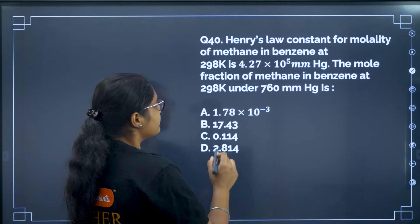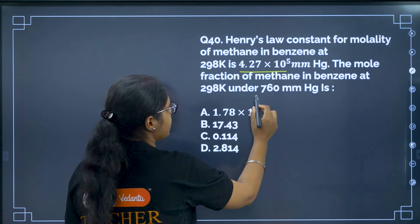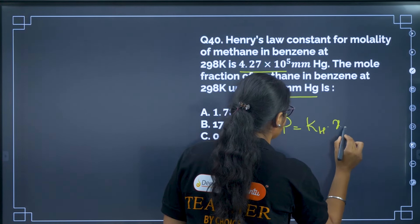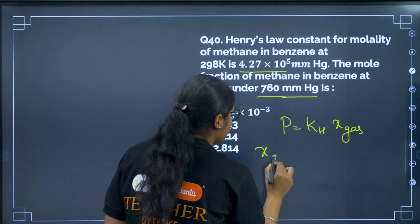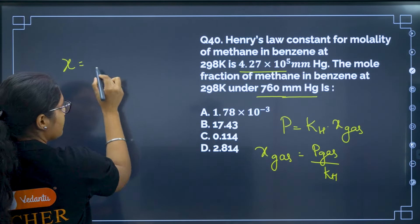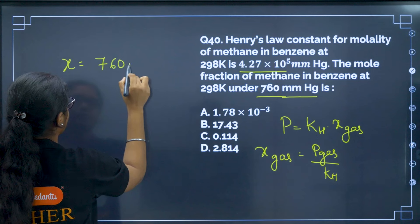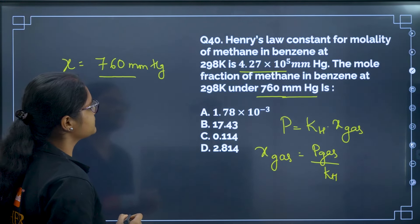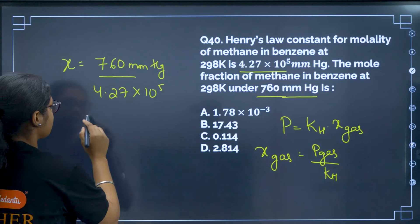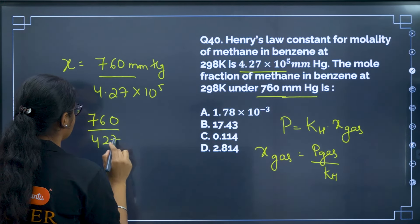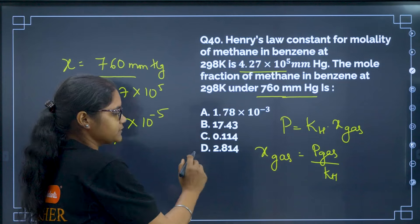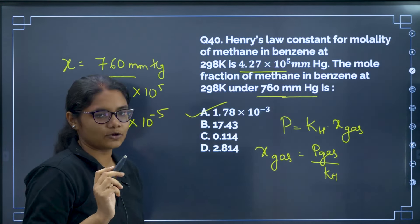Question 40: Henry's law constant KH is given. Mole fraction at 760 mmHg is to be found. Henry's law: P = KH × χ(gas). So mole fraction = P/KH = 760 / (4.27 × 10⁵). This gives a value on the order of 10⁻³. The correct answer is option A.